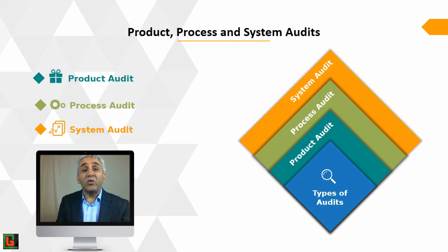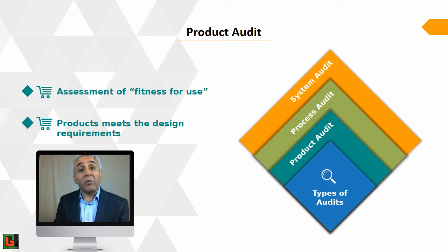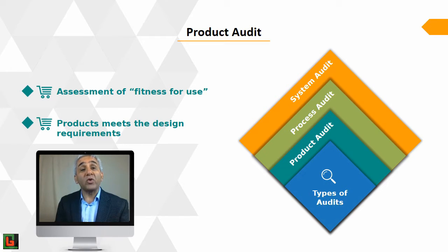Let's move on to the next few slides and look at the difference between these three types of audits. The focus of the product audit is on the end product. What we are looking at here is the fitness for use — whether the product being produced is fit for use, whether it is meeting the design requirements, what the opportunities to improve are, and what is going well and what is not going well.